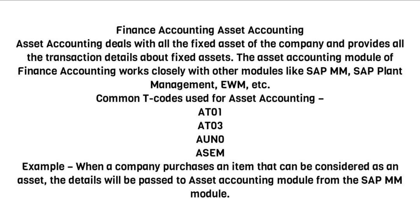Common T-codes used for Asset Accounting: AT01, AT03, AUN0, ASEM. Example: When a company purchases an item that can be considered as an asset, the details will be passed to the Asset Accounting module from the SAP MM module.